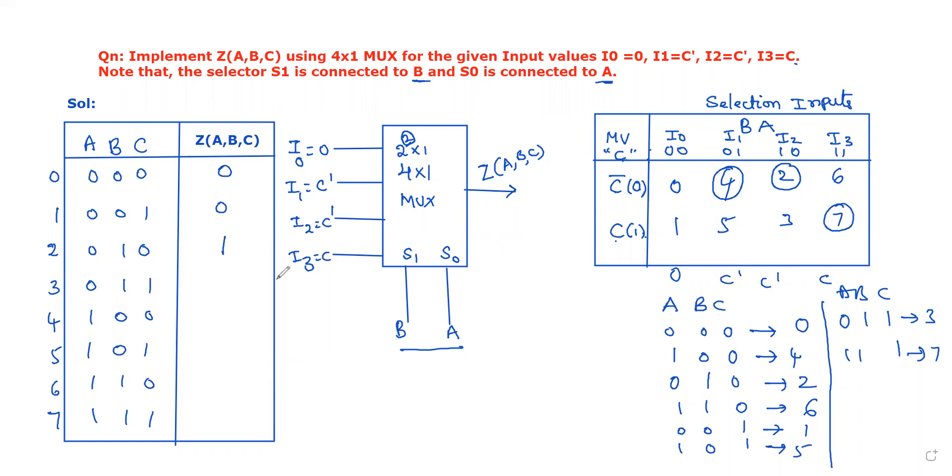Next, 3 is also not selected, its value is 0. Minterm 4 is selected, its value is 1. 5 not selected. Next, 6 also not selected. Next, 7 is selected, so only three outputs are 1s. This is the truth table for the given values of I0 to I3 using the 4 by 1 multiplexer.